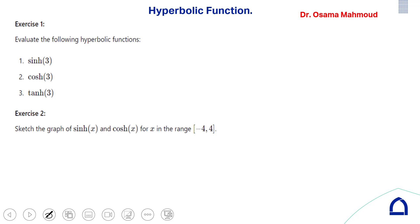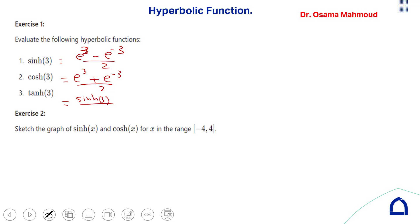To find sinh(3), substitute: (e^3 − e^(−3)) / 2. For cosh(3): (e^3 + e^(−3)) / 2. For tanh(3), divide the sinh(3) value by the cosh(3) value.